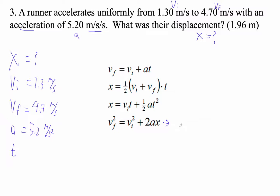So 4.7 squared equals vi, which is 1.3 squared, plus 2 times 5.2 times x, and then x is what we're solving for.